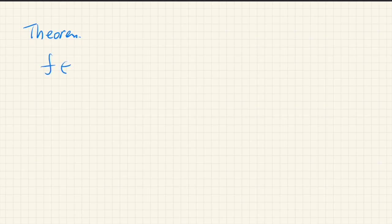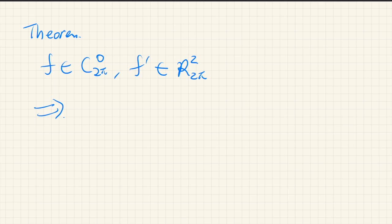Now let us prove our main result. Theorem: if f is a continuous function and f prime, its derivative, is square integrable, then the Fourier series of f converges uniformly to f. Here we use the double arrow to indicate that the convergence is uniform. Let's prove this.